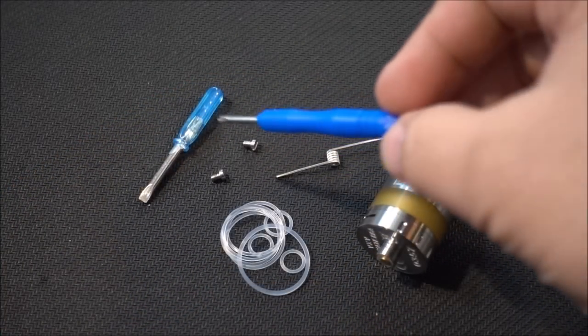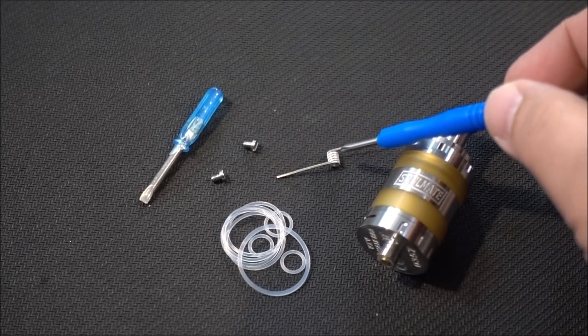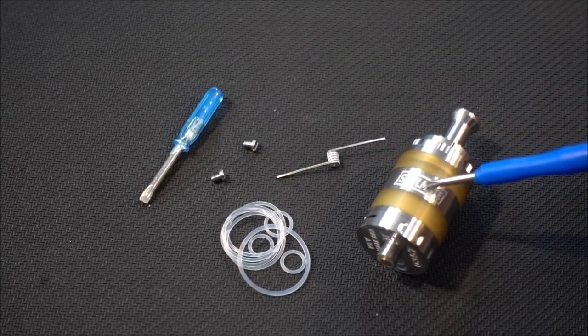Inside the packaging you get your infamous blue screwdriver, two post screws, a coil, extra O-rings, and your Soulmate RTA.